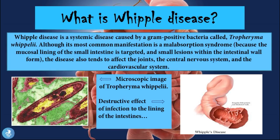So what is Whipple disease? Whipple disease is a systemic disease caused by a gram-positive bacteria called Tropheryma whipplei. Although its most common manifestation is a malabsorption syndrome because the mucosa lining of the small intestine is targeted and small lesions within the intestinal wall form, the disease also tends to affect the joints, the central nervous system, and the cardiovascular system.